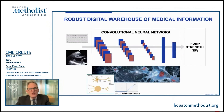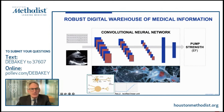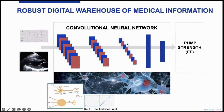We took advantage of this robust digital warehouse of medical data and utilized a convolutional neural network — a form of artificial intelligence designed to mimic the human cortex. Instead of individual neurons, there are simple math equations which, like neurons, generate a threshold output once there are sufficient inputs. You put in an electrocardiogram — the voltage-time waveform — and ask the network: what's the ejection fraction? It would have no idea; it would guess 35%. During training we'd say, no, it's actually 55%, and through back propagation it adjusts the weights and biases to slowly get the network closer to creating a function that, given an ECG, can give you the answer.